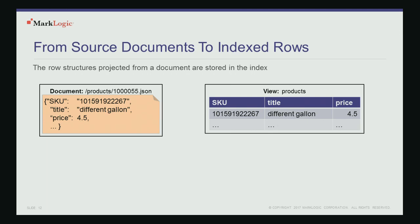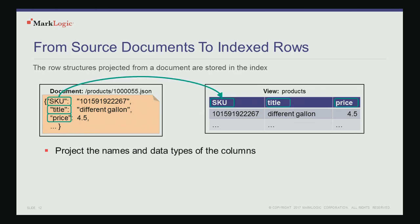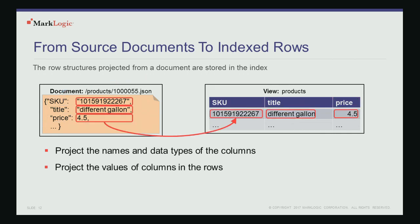Conceptually, here's how projecting rows from documents works. In the simplest case, the keys for properties in a JSON document are equivalent to the columns, and the values of those properties are equivalent to the values of the columns in the row. So we've projected the row out of the JSON document into a view. This is a simplification — you have much more flexibility: you can project multiple views out of a single document, multiple rows out of a single document, and combine multiple properties in a single column. And because this is happening at index time, you're not making a commitment to the index representation when you persist the document.